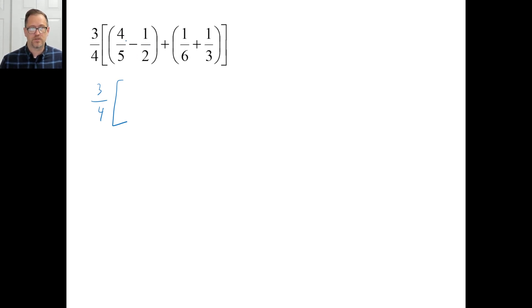Ten is the common denominator, right? So four-fifths as a tenth would be eight-tenths, right? Minus half would be five-tenths, right? So it's going to be three-tenths, plus, and of course, six will be the common denominator here. One-sixth plus two-sixth, right, will be three-sixths, right? Which is the same thing as one-half.